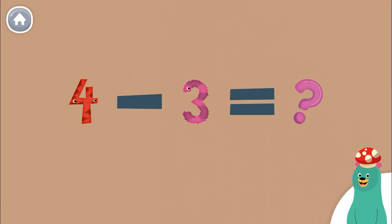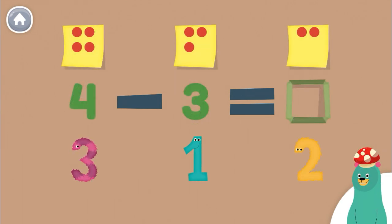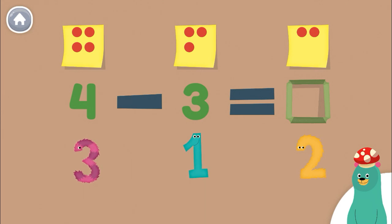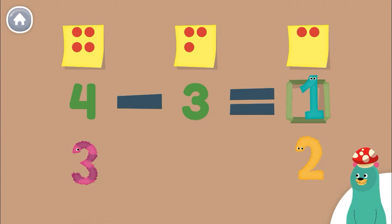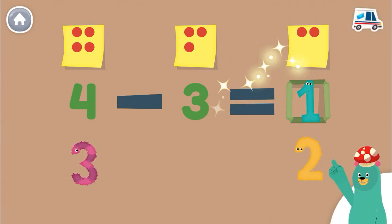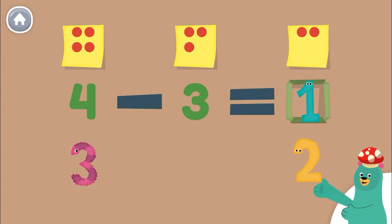Let's do some subtraction. We're going to subtract some numbers. What is 4 take away 3? Drag the number to the green square. 1. Great job! 4 minus 3 is 1.